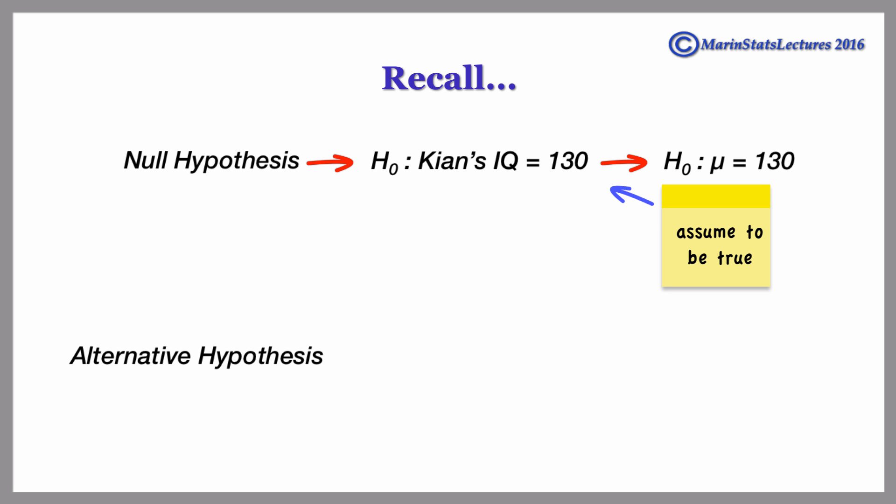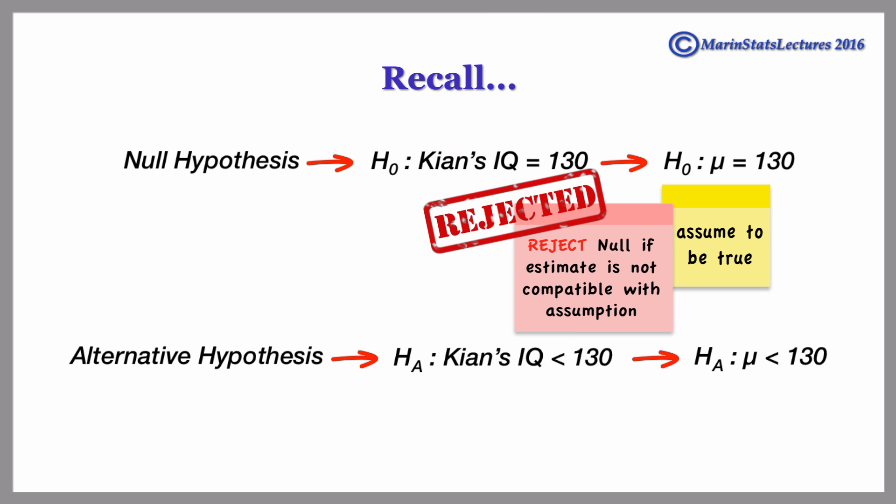We're using a one-sided alternative hypothesis that his IQ is less than 130. We will reject our null hypothesis in favor of the alternative only if our sample estimate is not very compatible with our null hypothesis.